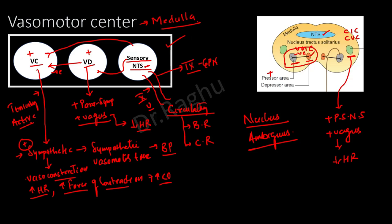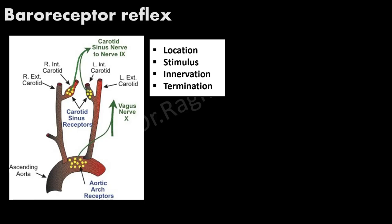Now let's discuss the baroreceptor reflex. Baroreceptors are located in two important places. First is the carotid sinus — a small dilated area at the beginning of the internal carotid artery, just after the bifurcation of the common carotid. Second is in the wall of the aortic arch, called the aortic arch receptors.